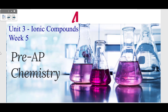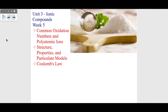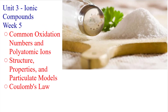Hey, this is Mr. Aiden. Welcome back to Pre-AP Chemistry. This is Unit 3 Ionic Compounds for Week 5. We are in a new unit called Ionic Compounds, which is all about that thing that'll give you 5 to 10 years in prison — it's a salt. Sodium chloride, something like that. We're going to learn all about that. We'll look at common oxidation numbers, polyatomic ions, the structure and properties, particulate models of ionic compounds, and Coulomb's Law.